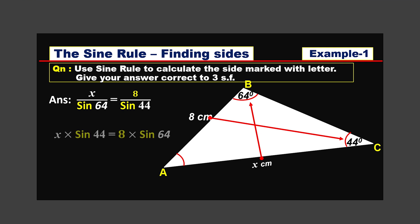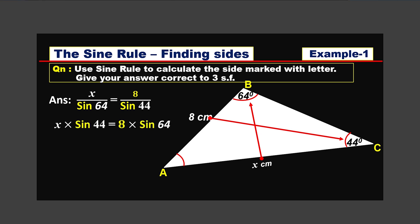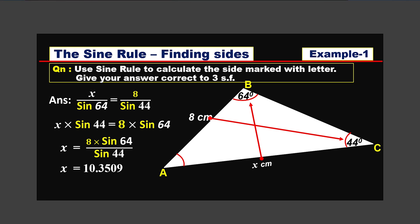The next step is cross multiplication: x multiplied by sine 44 equals 8 multiplied by sine 64. To find x, we divide sine 44 from both sides — sine 44 cancels. So x is equal to 8 times sine 64 divided by sine 44. Evaluate this with your calculator: multiply 8 times sine 64, then divide by sine 44. The answer is 10.3509.